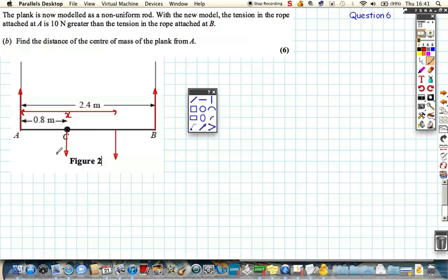So what do we have here? We have the particle, weight is still 8g. The rod is 12g, but it's now acting at not 1.2 meters. It's acting some unknown distance X. And it doesn't matter if my diagram is wrong and this is actually less than 1.2 meters. It's irrelevant. And what I've got here is the tensions. The tension at A is 10 newtons greater than the tension at B. So I'm just going to call this tension T and this one T plus 10.